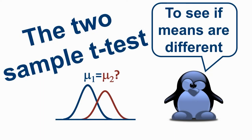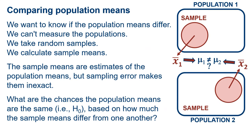The two-sample t-test is the most common way to see if the means of two different populations are different from each other. The two-sample t-test is used for comparing population means. We want to know if the population means differ, but we can't measure the populations because it's impractical. We therefore take random samples from the populations and calculate the sample means. The sample means are estimates of the population means, but sampling error makes them inexact. Even if the populations do have exactly the same mean, the sample means are going to differ from each other because of sampling error.